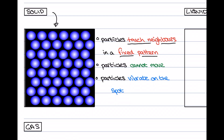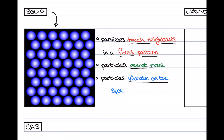The particles in a solid cannot move away from one another — all they do is vibrate on the spot. Because of this, the solid has a fixed shape and it also cannot flow.